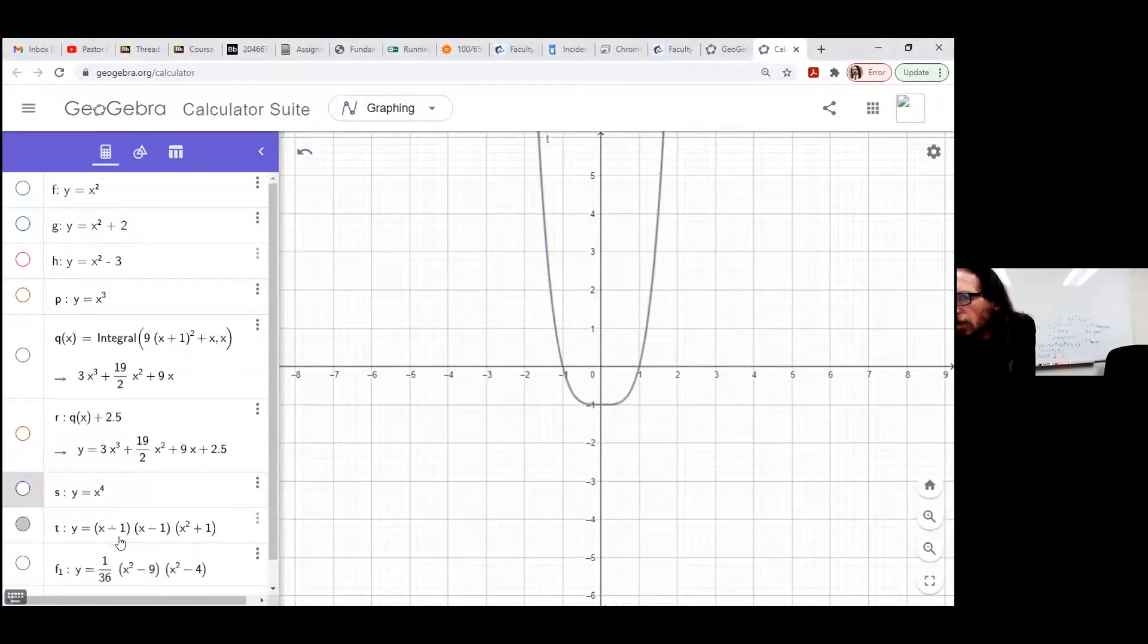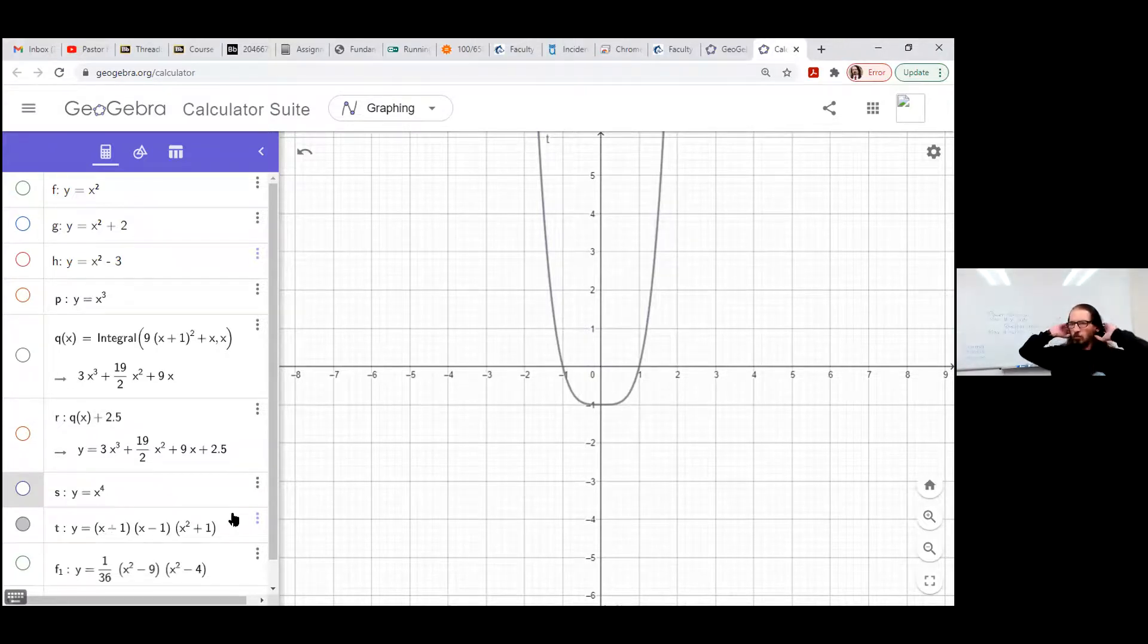Now if we look at quantity (x minus one) times quantity (x plus one) times quantity (x squared plus one), if you multiply that all out, we would have another fourth degree polynomial. And we still only have one turn, but there would be two x-intercepts on that. Here and here, the turn's here.